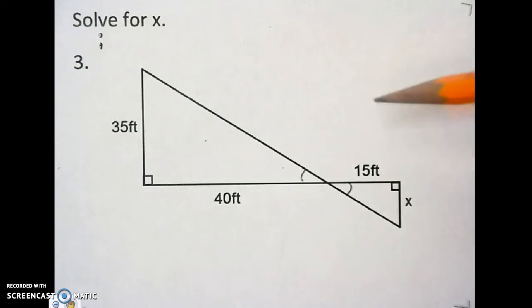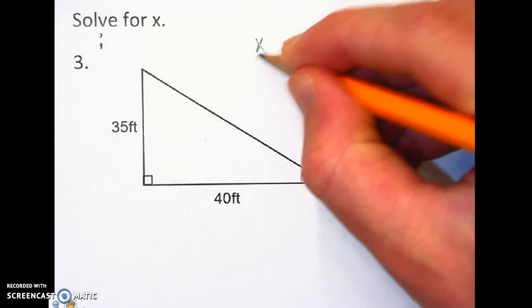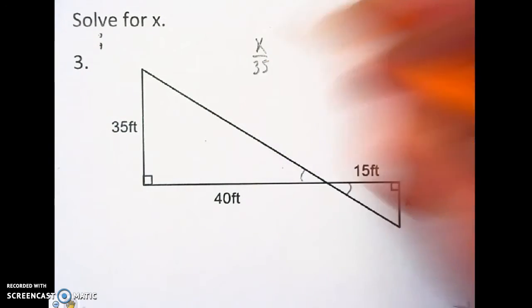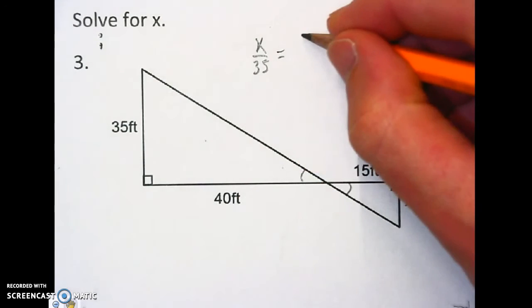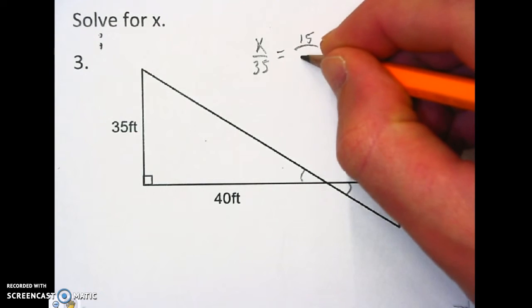So I'm going to set this up. This backside relates with this backside over here. So I'm going to do x over 35 equals short side over the long side again, so 15 over 40.